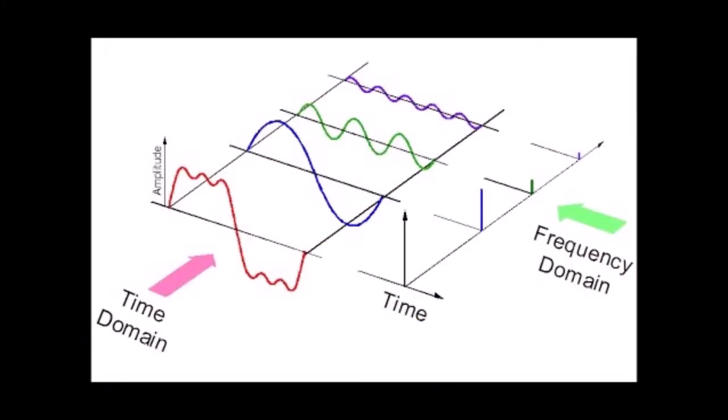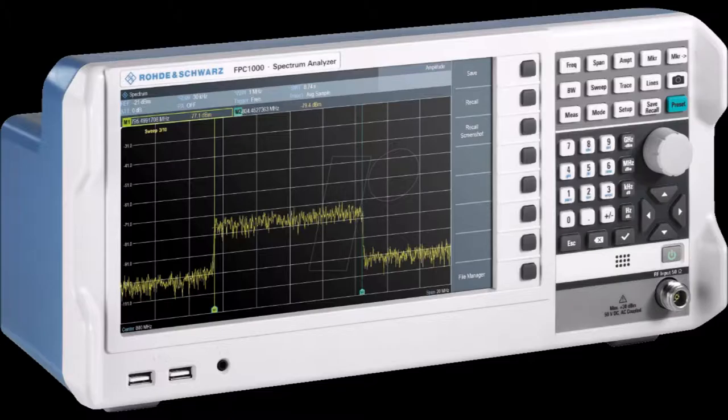Frequency domain. In electronics, control systems engineering, and statistics, the frequency domain refers to the analysis of mathematical functions or signals with respect to frequency rather than time. Spectrum analyzer. A spectrum analyzer is a device that displays signal amplitude or strength as it varies by signal frequency. The frequency appears on the horizontal axis and the amplitude is displayed on the vertical axis.